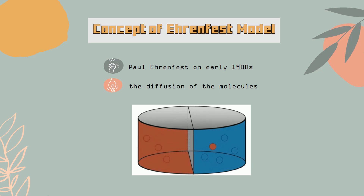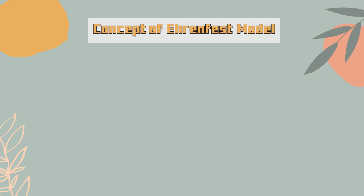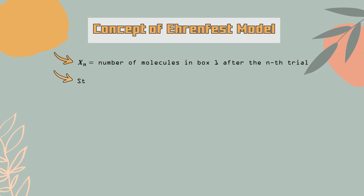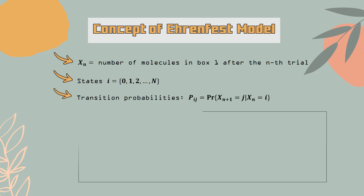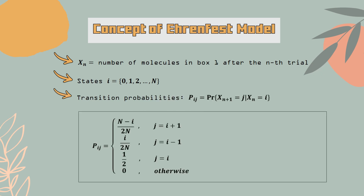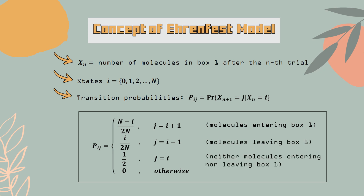Suppose there are N molecules in the box. Let X_n (n ≥ 0) be the number of molecules in box one after the nth trial. Then X_n is a Markov chain on the states i = 0, 1, 2, ..., N. The transition probabilities are as follows: j = i+1 refers to molecules entering box one, j = i-1 refers to molecules leaving box one, and j = i means neither entering nor leaving box one.